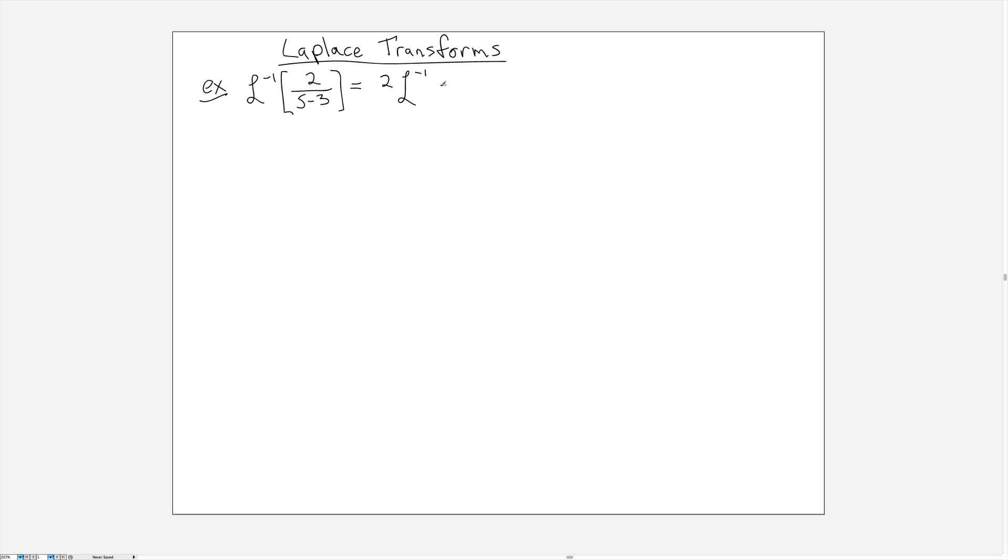What that means is that we can factor out that 2 and rewrite the problem as 2 times the inverse transform of 1 over s minus 3. Now whenever we have something of this form, the inverse transform is actually kind of easy to write down. Let me just show you why.